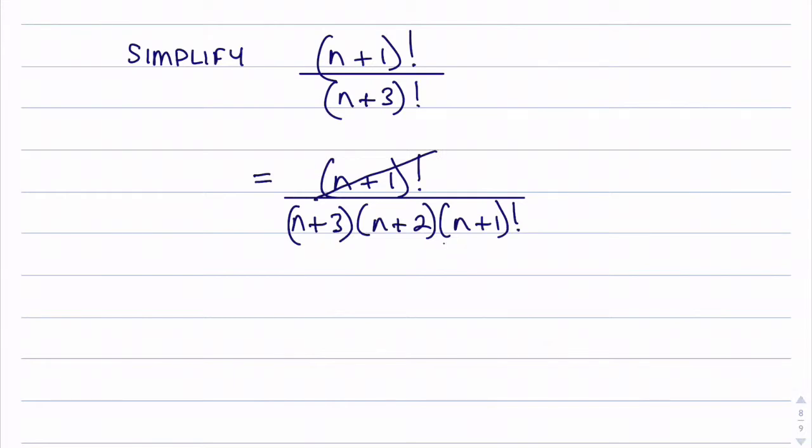So I can go ahead and just cancel those, and what I'm left with is 1 over n plus 3 multiplied by n plus 2.